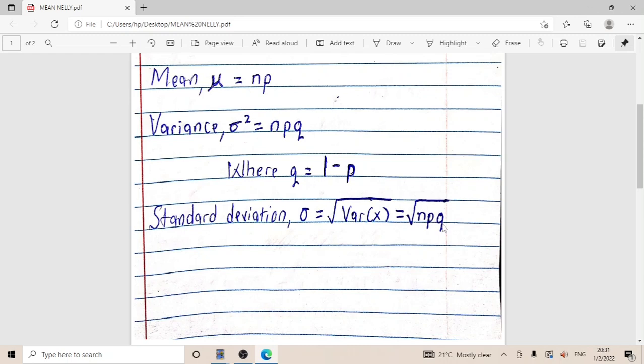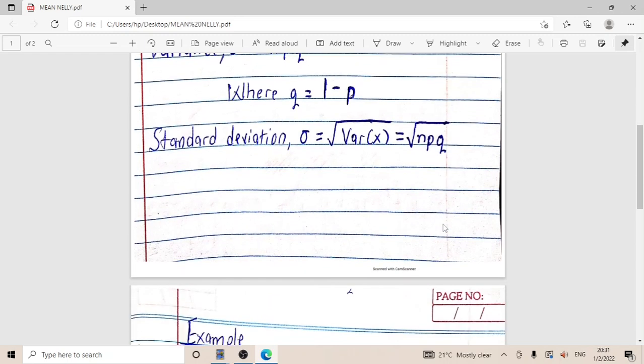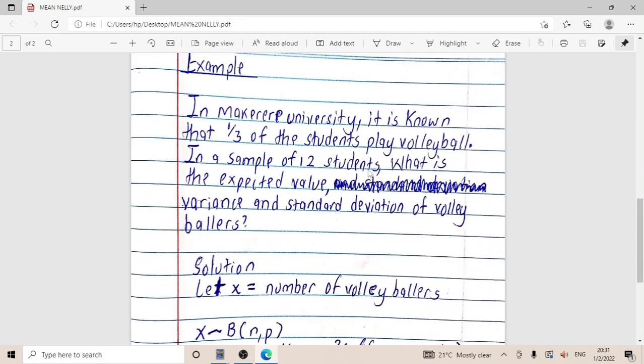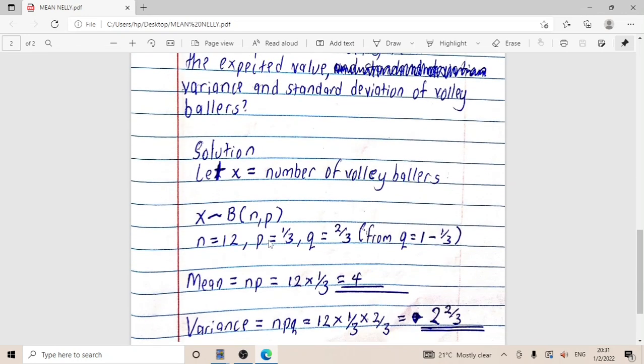An example: in McCL University, it is known that a third of the students play volleyball, so that is the probability of success. In a sample of 12, which is the n, what is the expected value, variance, and also the standard deviation of the volleyballers?